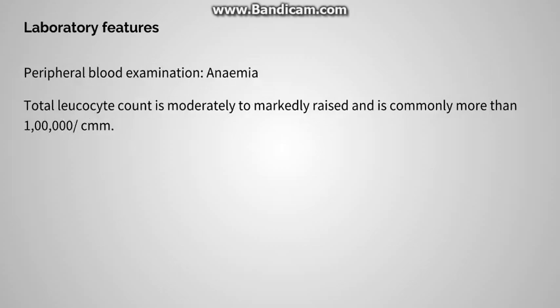Now going to the laboratory findings of the chronic phase of CML. In peripheral blood examination, we will discuss RBCs, then WBCs, then platelets. For RBCs, we find anemia — there is normochromic to normocytic anemia. For the WBC series, the TLC count is moderately to markedly raised, mostly above 1 lakh per cubic mm.